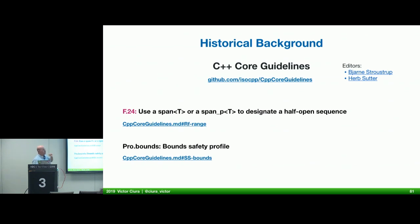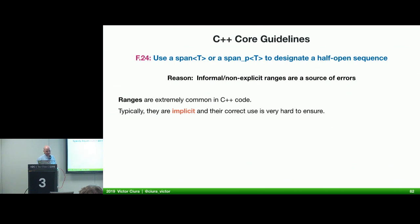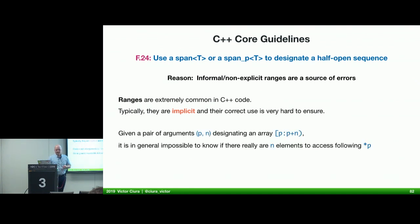It all originated in the C++ Core Guidelines around 2015-2016. We have clause F.24: use span<T> or span<PT> to designate a half-open sequence, under the bounds safety profile. Informal non-explicit ranges are often a source of errors, and ranges are extremely common in C++ code. Given a pair of arguments P and N, in general it's impossible to know if there really are N elements that can be safely accessed after the reference in P going forward. GSL span — where GSL stands for Guideline Support Library — was designed to solve this problem by giving it an explicit context: explicitly defining a range as a parameter, as opposed to a pair of iterators or a pointer plus a length.